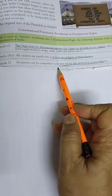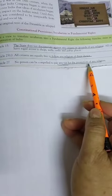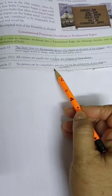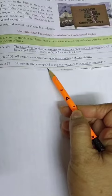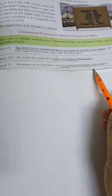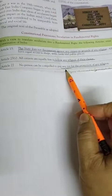Article 27: No person can be compelled to pay any tax for the promotion of any religion. किसी भी person को compelled नहीं किया जा सकता, कि किसी particular धर्म को promote करने के लिए, उसके लिए tax दिया जाए.